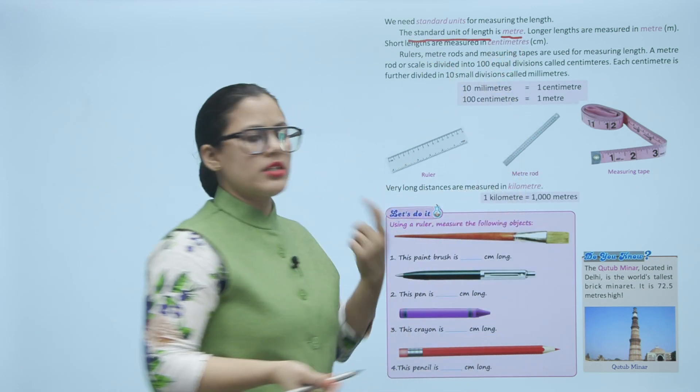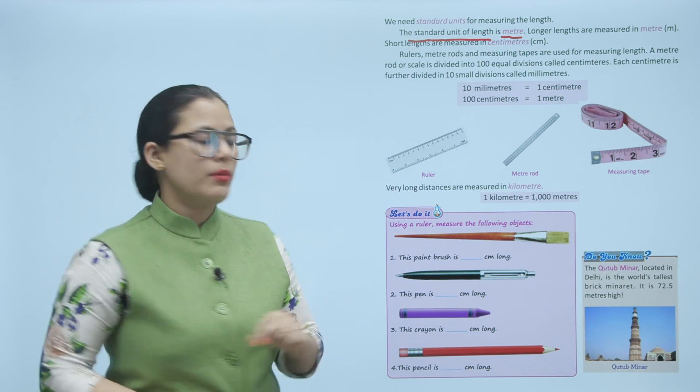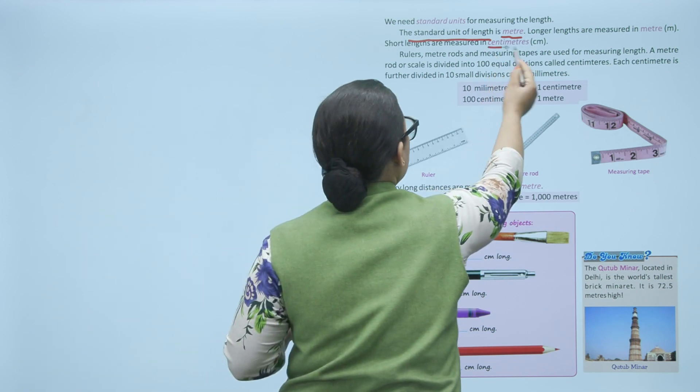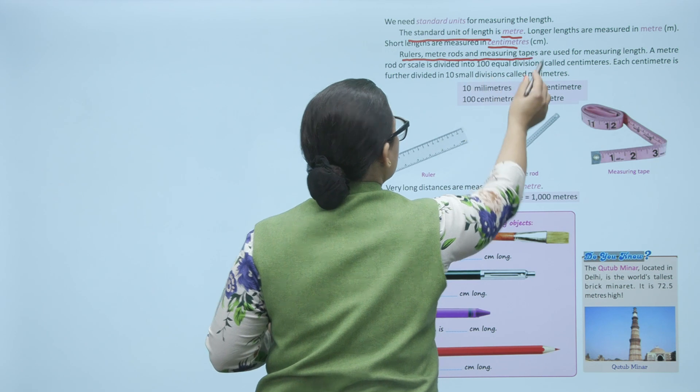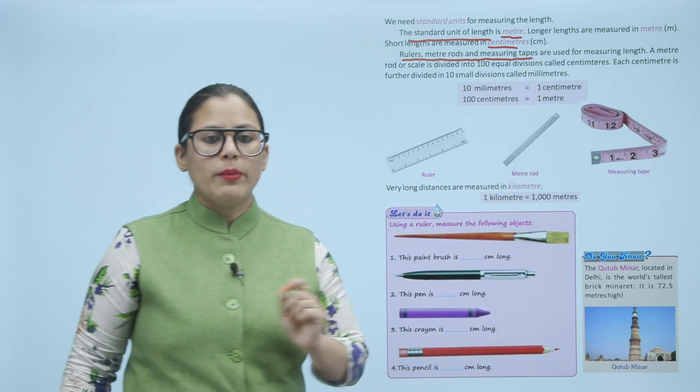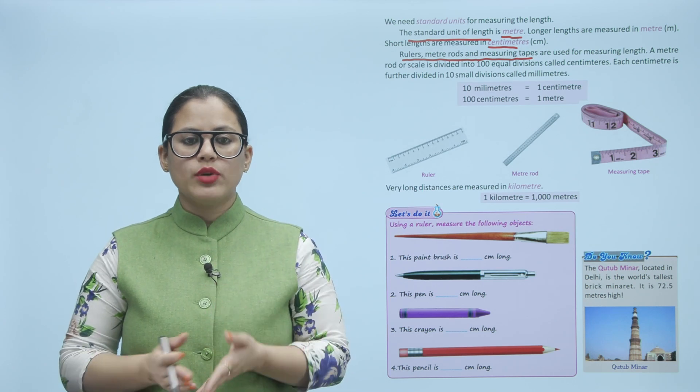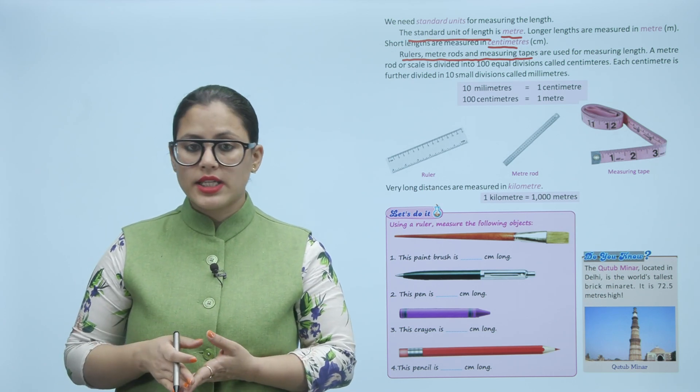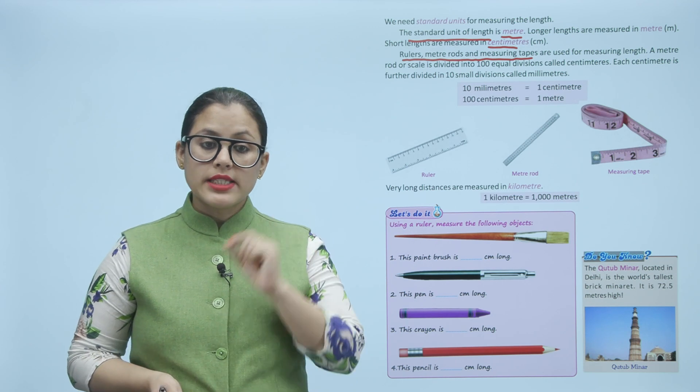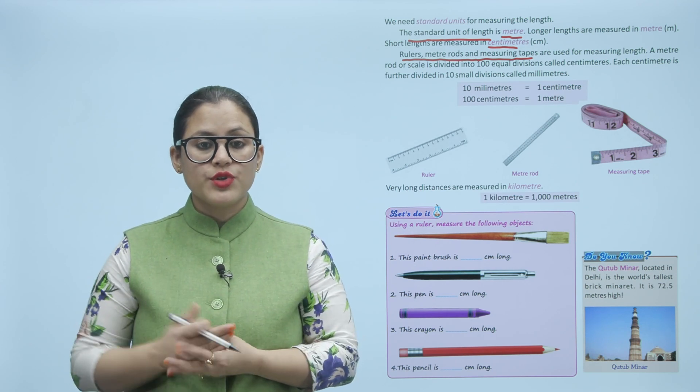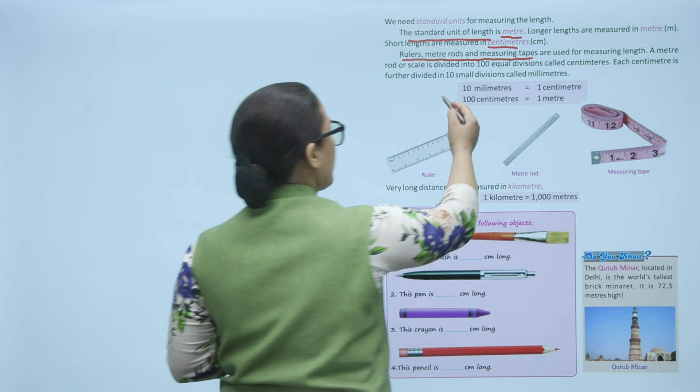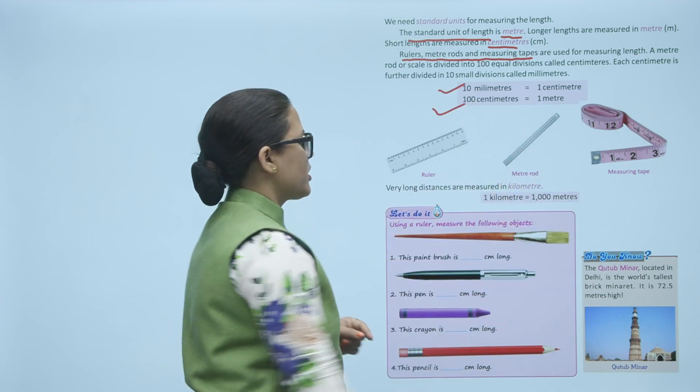The standard unit is meter. If it is longer length, then we measure it in meters. And if it is shorter, then we do it in centimeters. Like the rulers, meter rods and measuring tapes, they are used to measure length. Now meter rod or scale are divided into 100 equal divisions, we call it centimeter. Every centimeter is divided into 10 small divisions. Look, 10 millimeter equals 1 centimeter and 100 centimeter equals 1 meter.